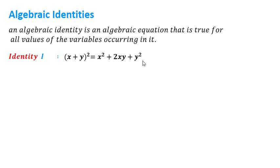This identity you have learned in your lower standard. Here we are going to see a few identities which you already know, and we will add a few more. You can prove these identities — it is very simple. For example, to prove (x + y)², you multiply x + y by x + y and simplify to get x² + 2xy + y².